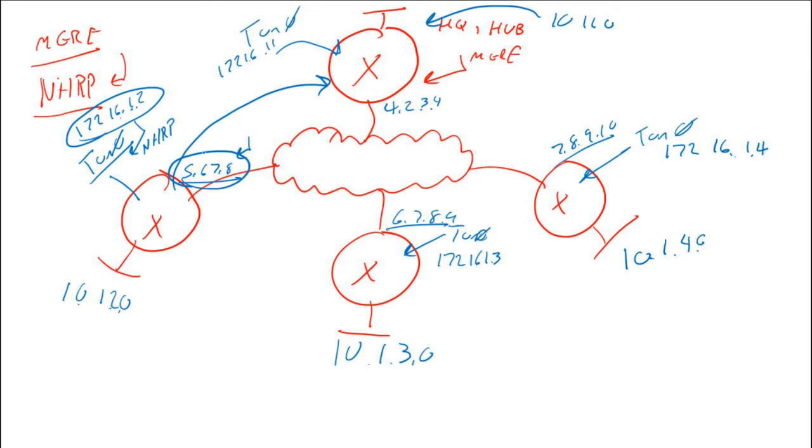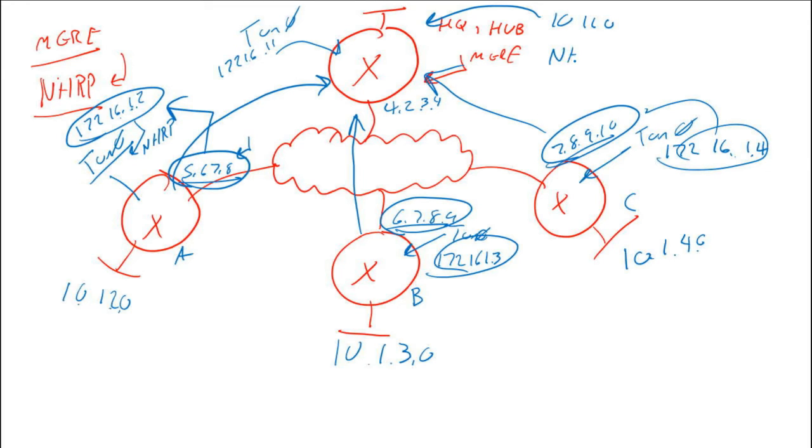The hub creates an NHRP registration table or binding table, which combines the public IP address to tunnel interfaces. Just like site A did, this site B and C are going to perform the same operation. When they boot, an NHRP registration occurs where they register their public IP to this tunnel interface. Again, public IP to the tunnel interface, all this goes into an NHRP binding table.